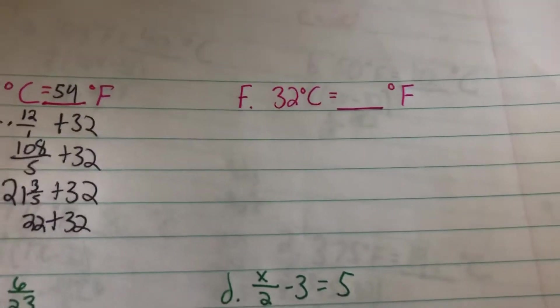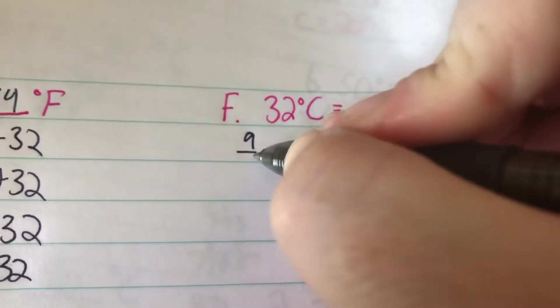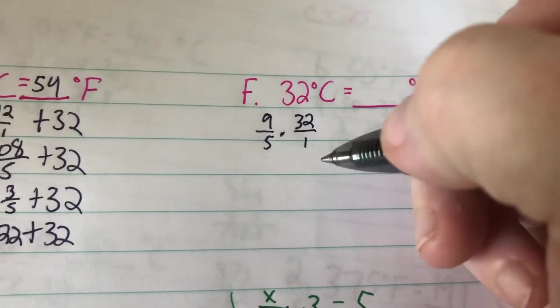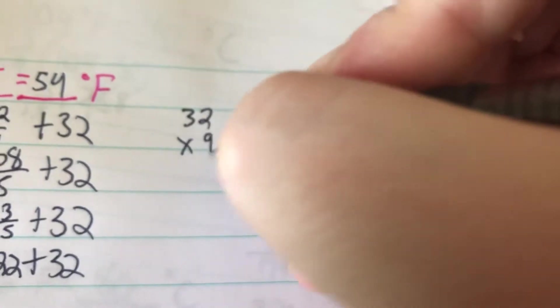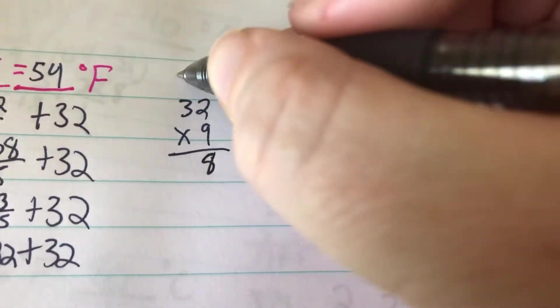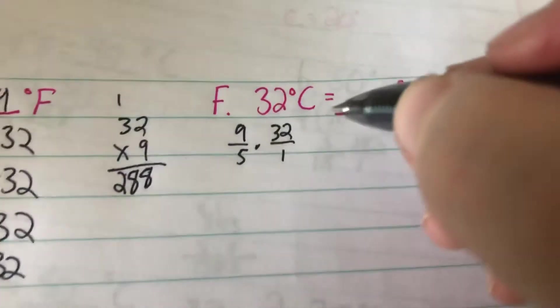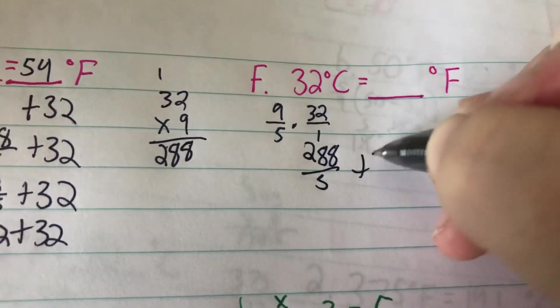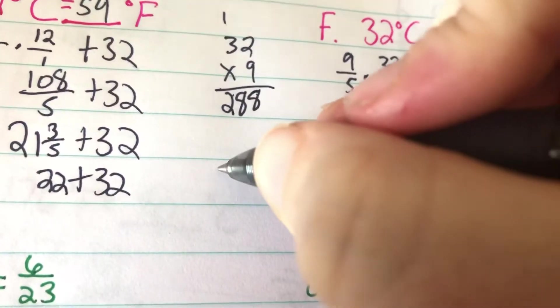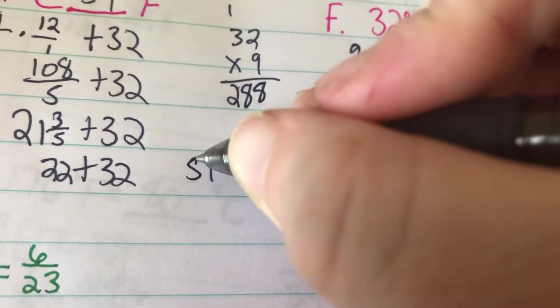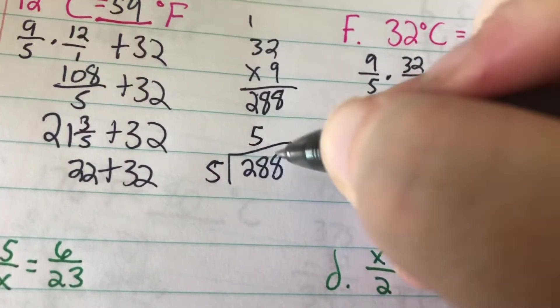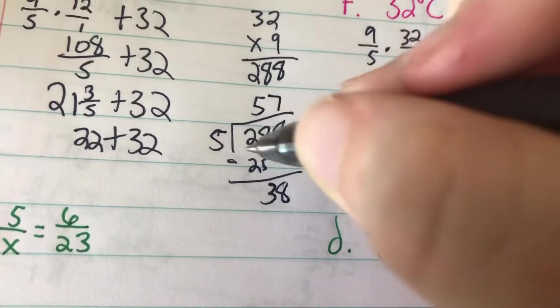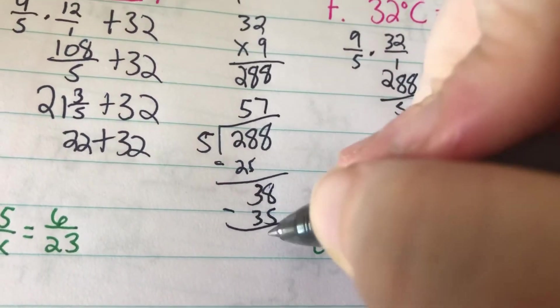E, 32 degrees Celsius. So 9/5 times 32 over 1. Can't go into it, so we've got to multiply. 32 times 9. 9 times 2 is 18, 9 times 3 is 27, 28. So it's going to be 288 over 5 plus 32. Now we do 288 divided by 5. 5 into 28 is 5 times. 5 times 5 is 25, 3. Bring down my 8. 5 goes into 38 seven times. 7 times 5 is 35. Subtract, you get 3.